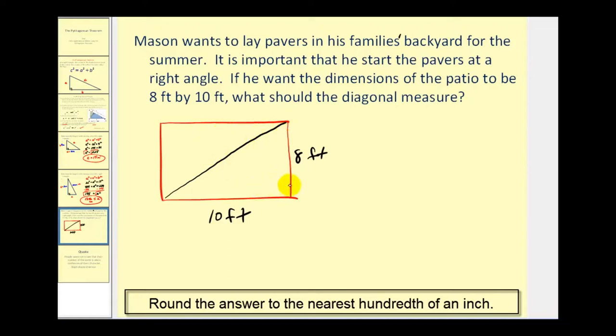And if we want this angle to be a right angle, then it must be true that C squared must equal A squared plus B squared. So using the Pythagorean Theorem, if we find the length of C, we can determine the length of the diagonal if this is a right angle.